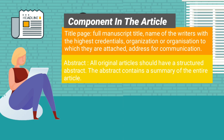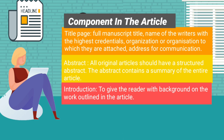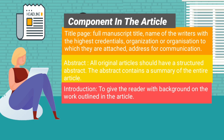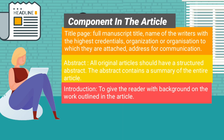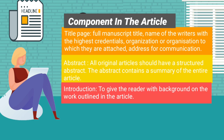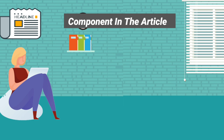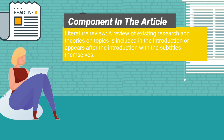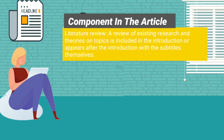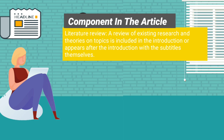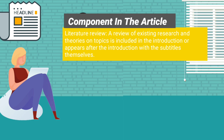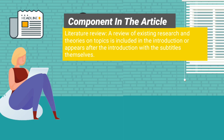The abstract — all original articles should have a structured abstract. The abstract contains a summary of the entire article. The introduction gives the reader background on the work outlined in the article. The literature review covers a review of existing research and theories on the topic.